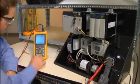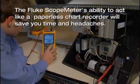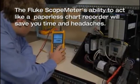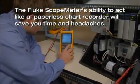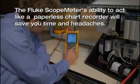While a DMM can give you real-time measurements, the Fluke Scope Meter's ability to act like a paperless chart recorder will save you time and headaches diagnosing intermittent problems.